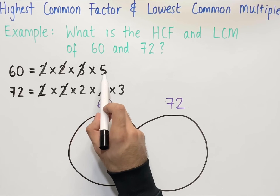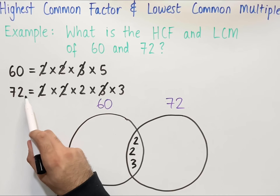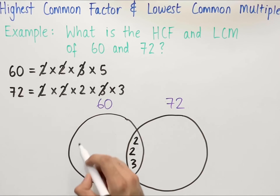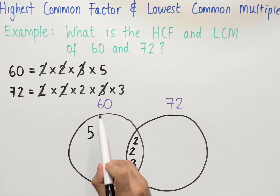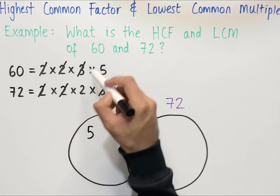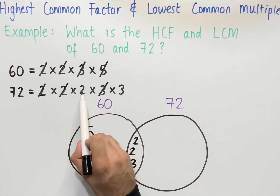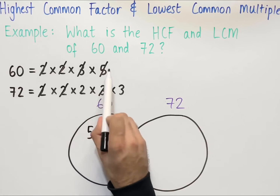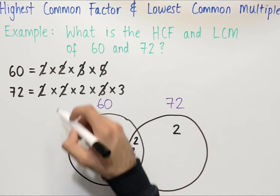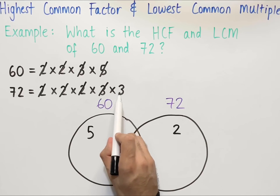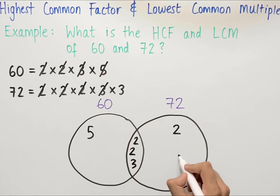Next, 5 is only within 60 — it's not common in 72 — so 5 goes on its own in the 60-only region, and we cross it out. Looking at the remaining numbers in 72: 2 can't be matched with any other number in 60, so it goes on its own in the 72-only region. Similarly, 3 can't be matched, so 3 goes on its own in the 72-only region.